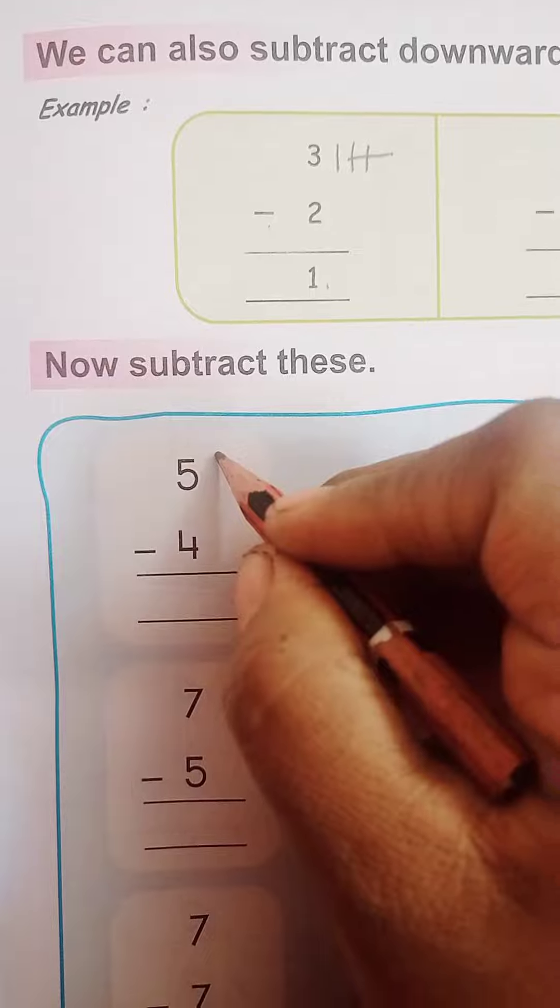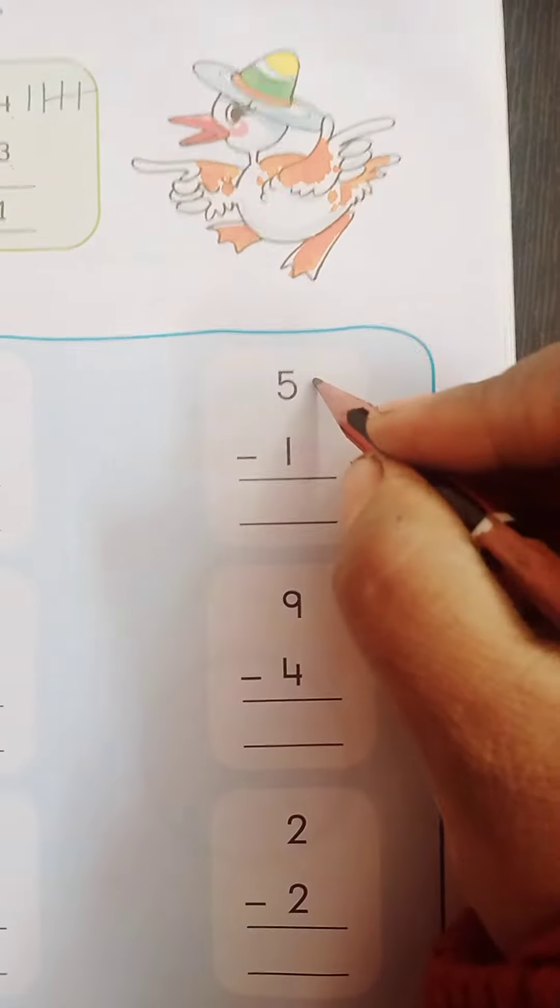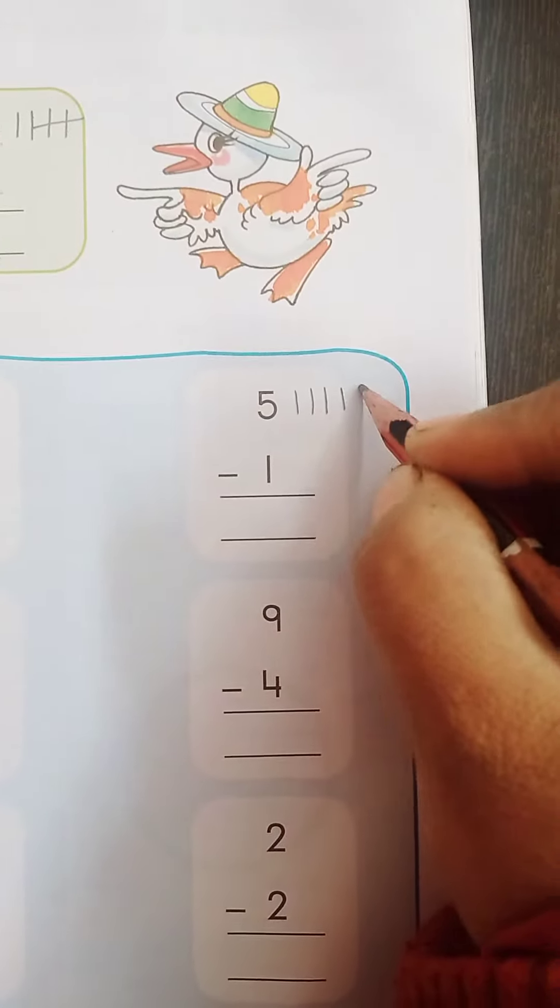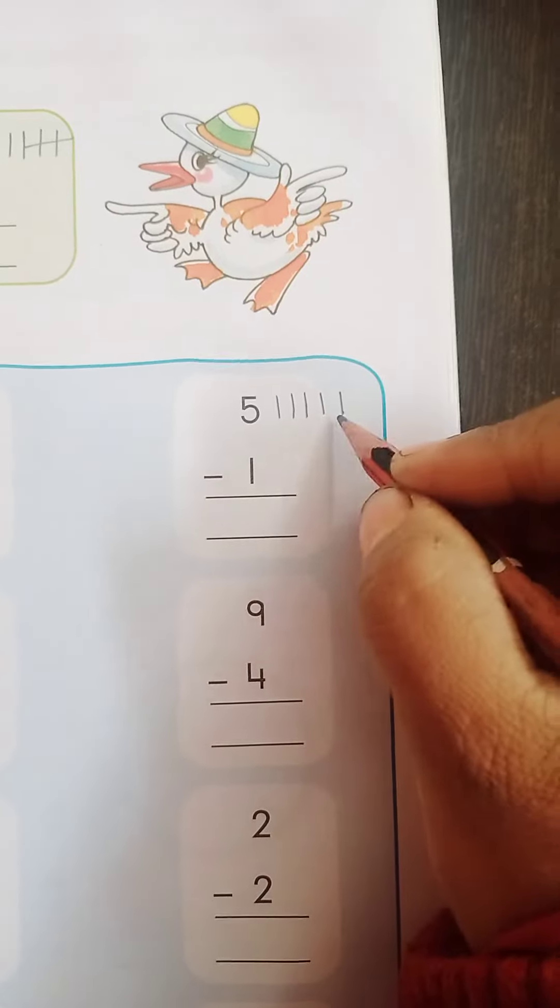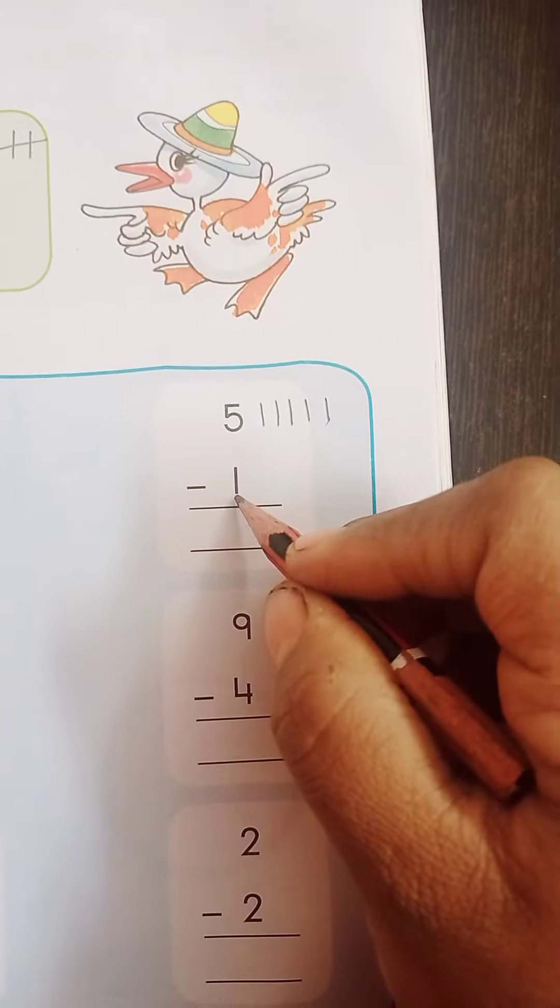Yaha bhi vaise hi karna hai. Yeh rehne do, dusra karte hai. Jaisi yeh 5 hai. 1, 2, 3, 4, 5, okay? 5 lines, 5 number, okay? And, which number is here?